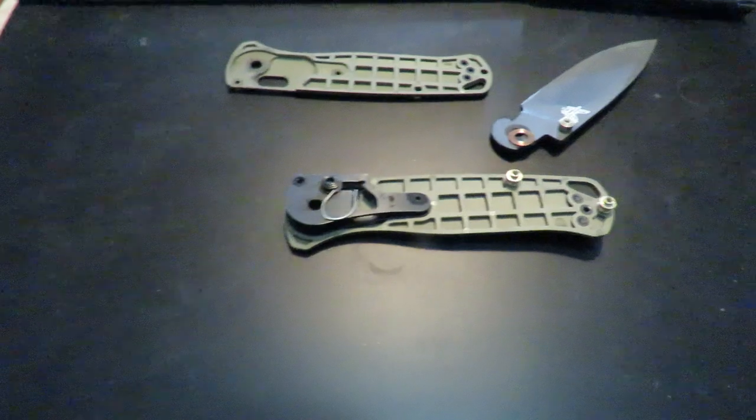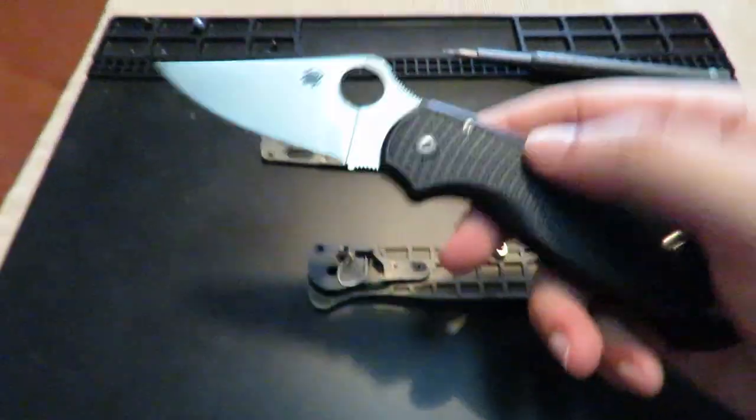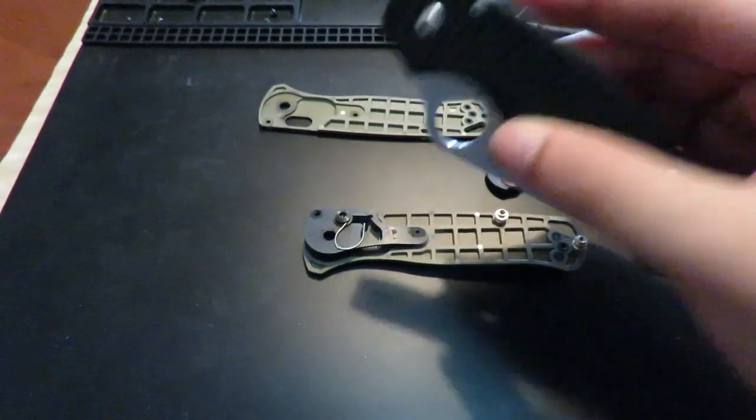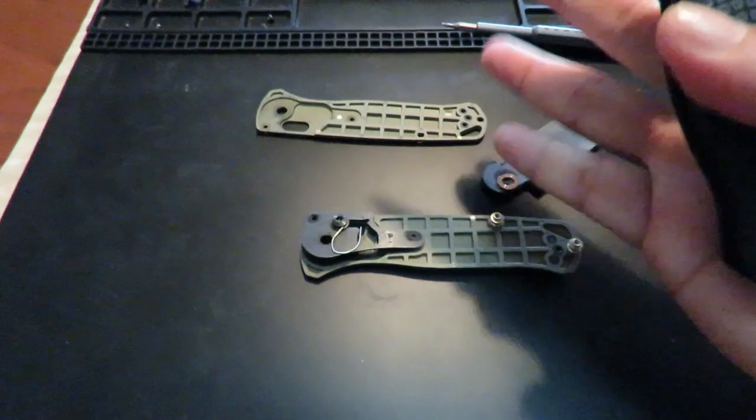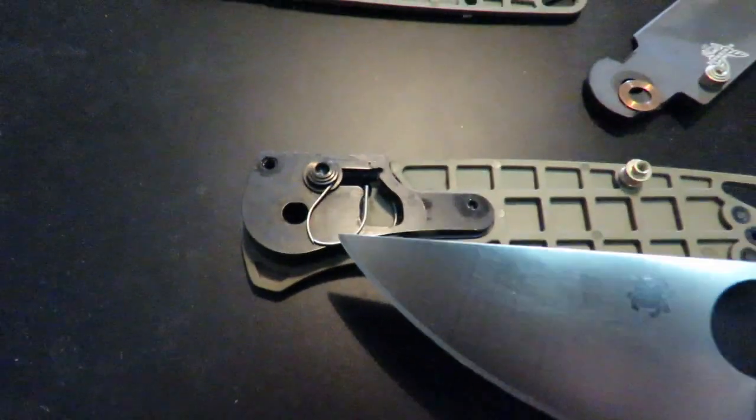Which is why my still favorite knife in my collection is the Para 3 lightweight. Mainly because the compression lock is a much simpler lock to design, a much simpler lock to take apart, and it doesn't have this kind of weakness that you have here, which is the Omega spring.